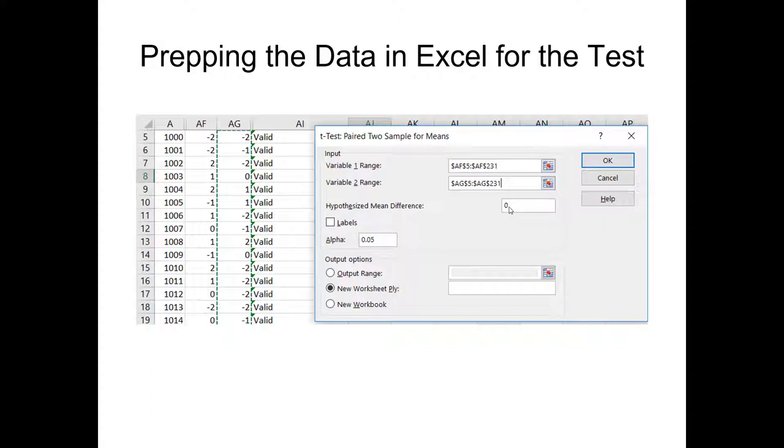My hypothesized mean difference is my null hypothesis, so 0. My alpha set to 0.05, meaning 95% confidence, and we'll put our results in a new worksheet. Let's go ahead and set up and run this analysis and then interpret it.